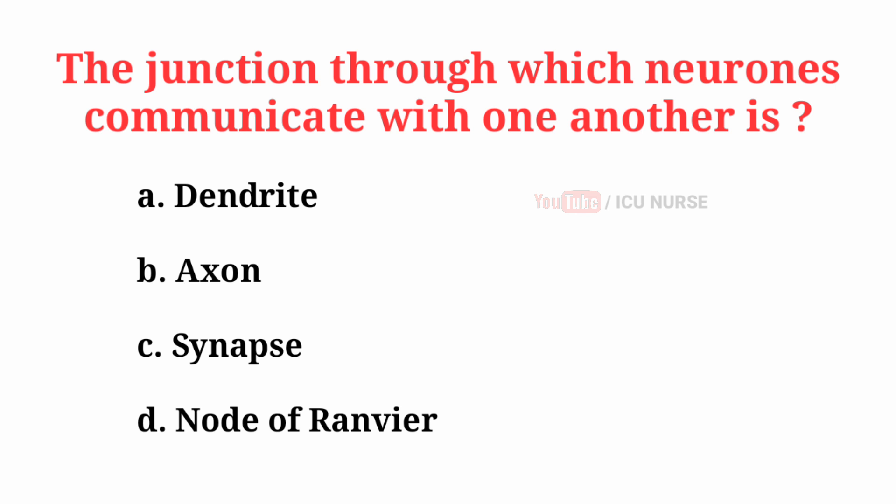The junction through which neurons communicate with one another is — the correct answer is C: Synapse.